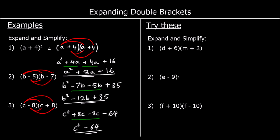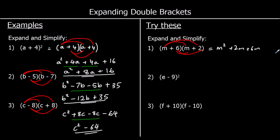OK, 3 for you to try. Pause the video and give them a go. So the first one: m times m is m squared. m times 2 is 2m. 6 times m is 6m. And 6 times 2 is 12. Collecting like terms, we've got 2m plus 6m, which is 8m. So we've got m squared plus 8m plus 12.